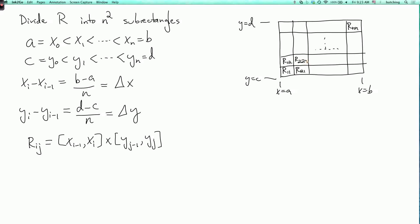Okay, and the area of this rectangle... Well, it's just the product of the lengths of the two sides, so that's delta x times delta y.